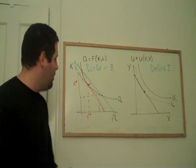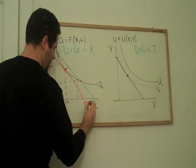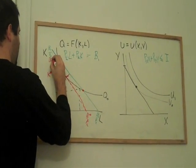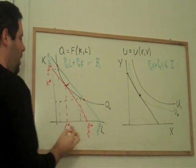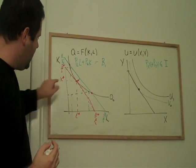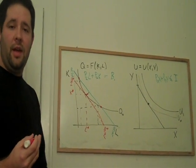And if we think about how much that would have to cost, that would just be B-star. Where B-star is just going to be how much this bundle, L-star and K-star, costs at the prices for labor and capital.